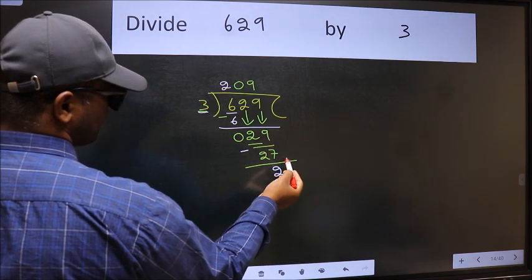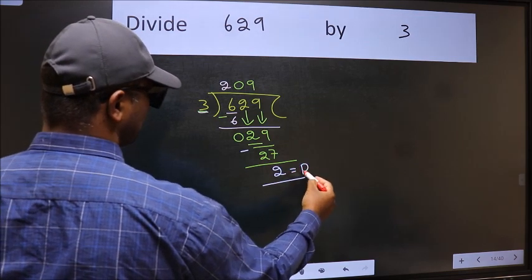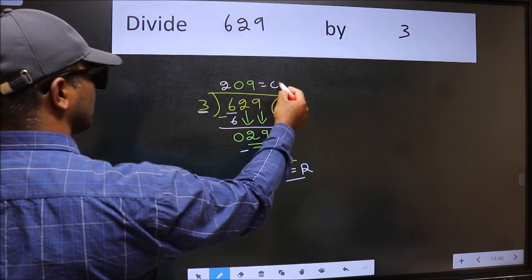No more numbers to bring it down. So we stop here. This is our remainder. And this is our quotient.